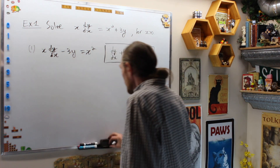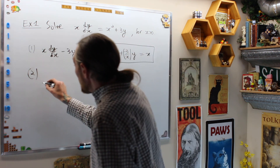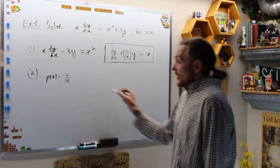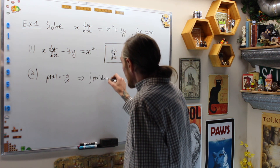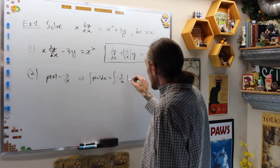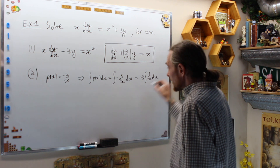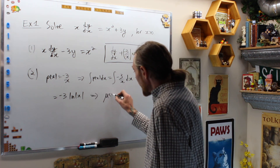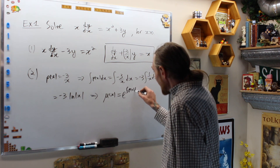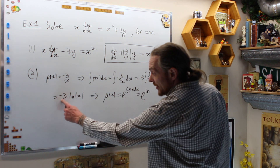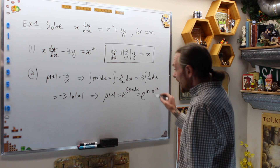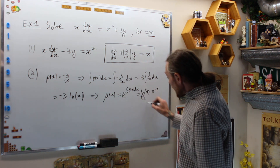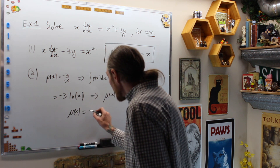Step 2: find the integrating factor. p of x is negative 3 over x. Therefore, the integral of p of x dx equals the integral of negative 3 over x dx, which is negative 3 times the natural log of the absolute value of x. Therefore mu of x equals e to the integral of p of x dx, which is e to the negative 3 natural log of x. Since x is positive, we can drop the absolute value. The e and the natural log cancel, giving mu of x equals x to the negative 3.